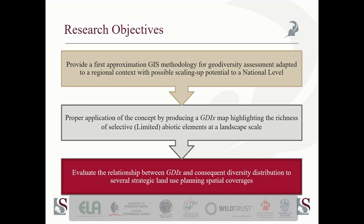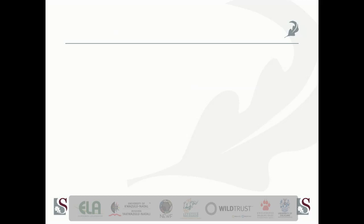We focused our research objectives on three primary outcomes. First, to actively apply a GIS methodology to the assessment of geodiversity at a regional scale, with the intention of upscaling or disaggregating it to a local municipality or ward level if necessary. Second, we defined the Geodiversity Index, titled GDIX, by the diversity of partial indices or partial landscape diversity factors, and how these linkages feed into the overall Geodiversity Index. Finally, how these all connect to land use planning coverages currently used as strategic land use planning tools.